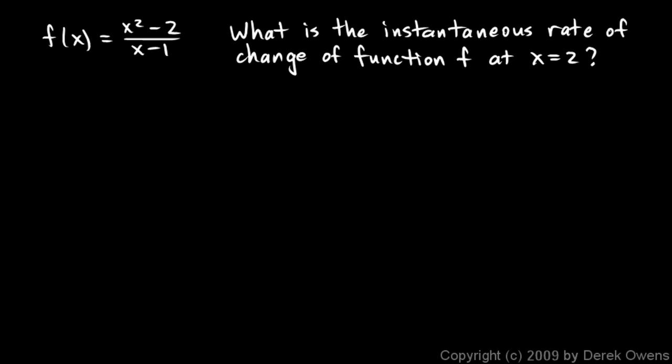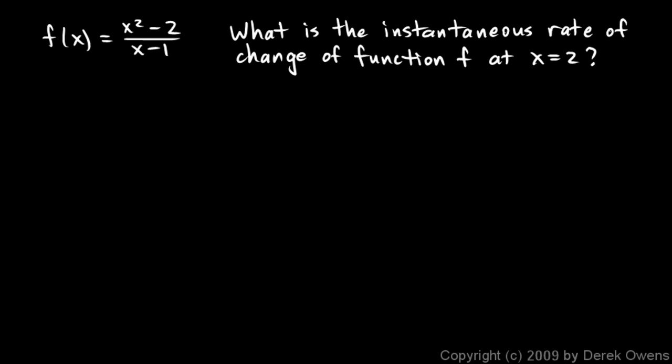Here's one more from an AP exam. f of x equals (x squared minus 2) over (x minus 1), and we're asked for the instantaneous rate of change at x equals 2. This language means the derivative — the rate of change as x changes at that instant — so we use the difference quotient limit as x approaches 2 of f of x minus f of 2 over x minus 2.